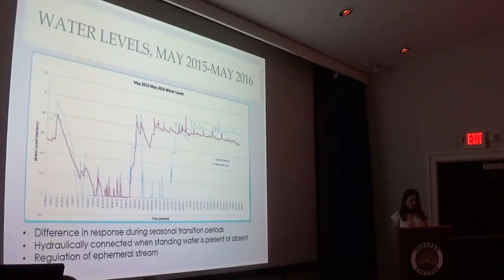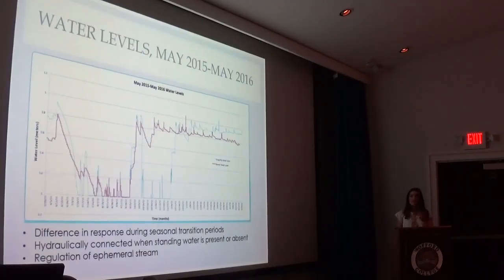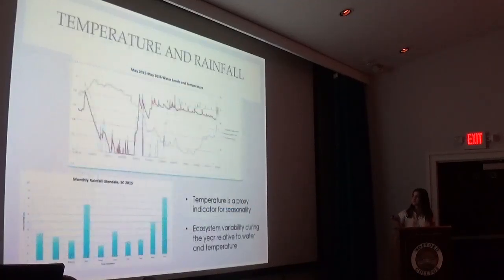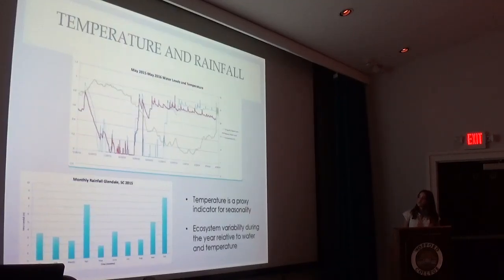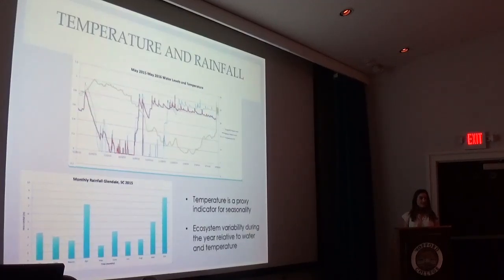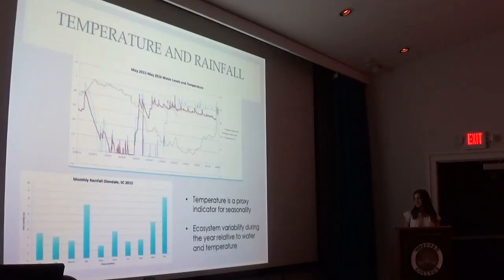The faster fill-in rate of Beaver could have actually been attributed to an ephemeral stream feeding in from the north, which could have acted as a regulating mechanism causing that water to have an output into the actual Lawson's Fork River. I also measured how temperature affected the wetlands and found that there is an inverse relationship between the water levels and temperature, suggesting that temperature is a variable indicator of seasonality. It was truly amazing to see how these ecosystems changed just over a period of a year — when there's no standing water, the ecosystem is completely different from when there is standing water. Those changes are relative to water and temperature.